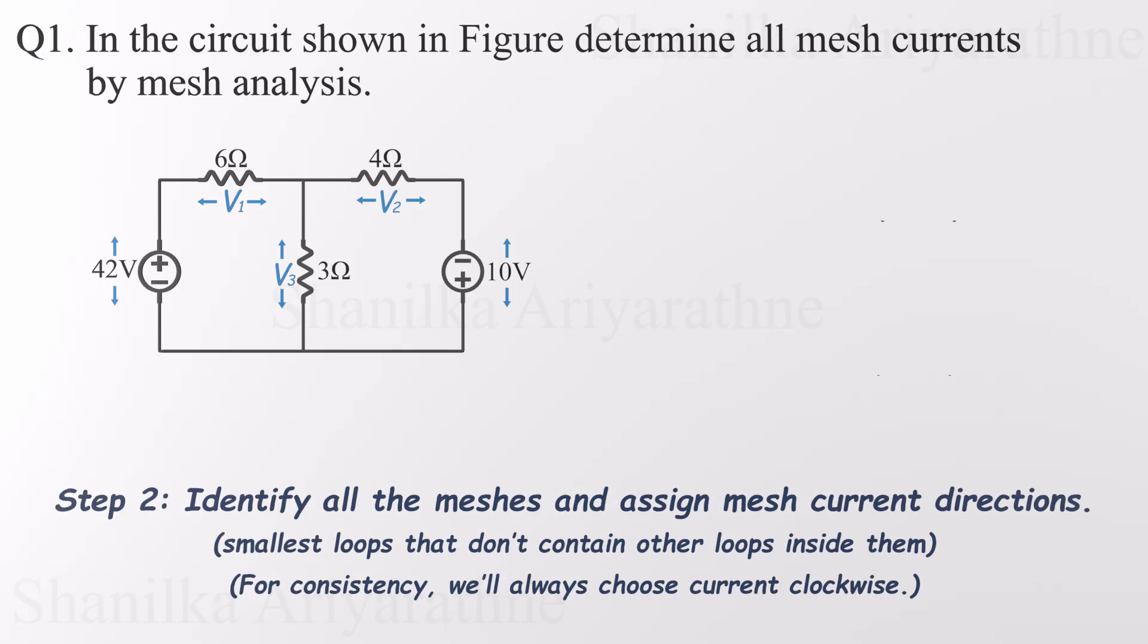Moving on to step two. Identify the meshes and assign current directions. Remember, meshes are the smallest loops in the circuit, and in this case we've got two of them. Each one will get its own KVL equation. Now it's time to assign mesh current directions. While the direction is totally up to us, I'll go with the standard clockwise direction for both. It's consistent, neat, and makes the math a whole lot easier later on.